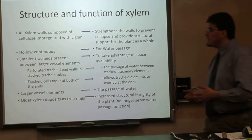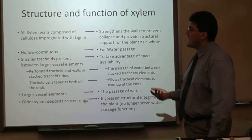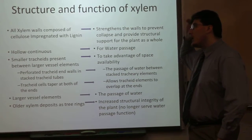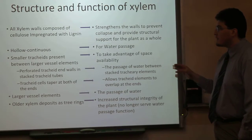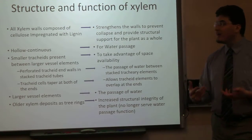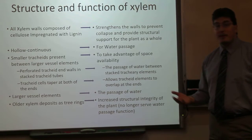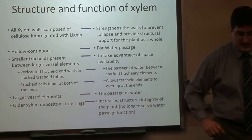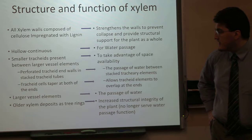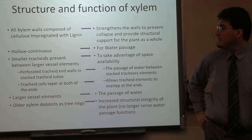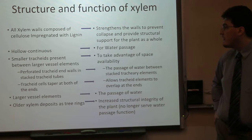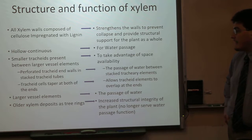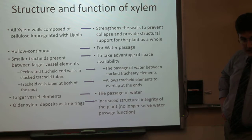Here are some notes about xylem structure and function. All xylem is composed of cellulose impregnated with lignin, which strengthens the walls, prevents collapse, and provides structural support. Xylem is hollow and continuous, allowing for the passage of water. Smaller tracheids are present between the larger vessel elements, taking advantage of available space. Perforated tracheid end walls in stacked tracheid tubes allow for the passage of water between stacked tracheary elements, and the tracheid cells taper at both ends so that tracheid elements can overlap at their ends.